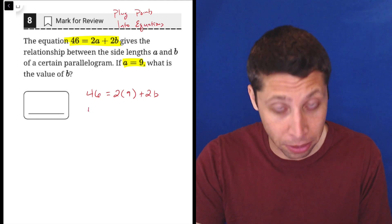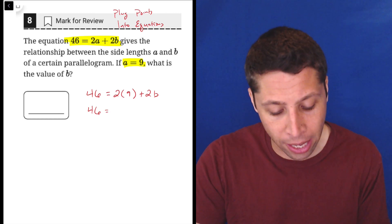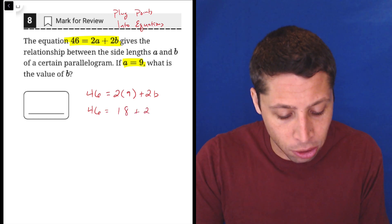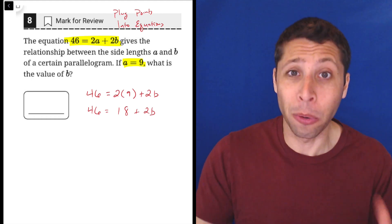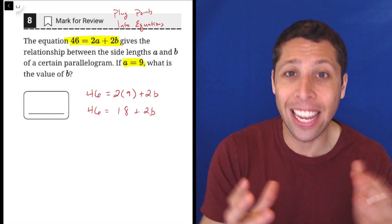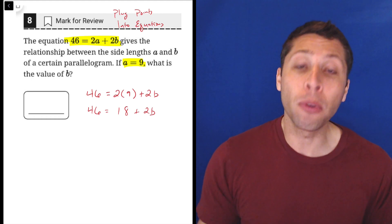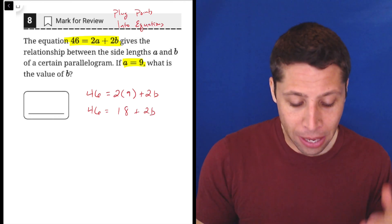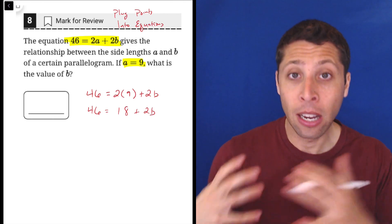So now let's follow some arithmetic. Let's simplify as much as we can. 2 times 9 is 18. The first thing whenever we have algebra is we want to do arithmetic. We want to see if there's anything we can condense and simplify. But at this point, we can't move any further with arithmetic because we can't combine that 18 with the 2B.